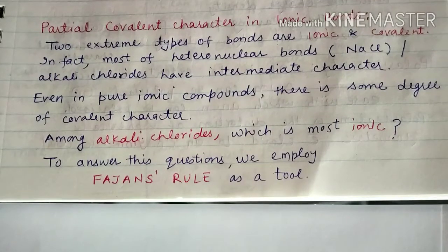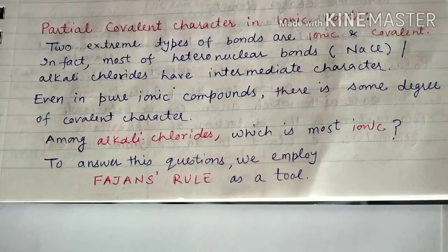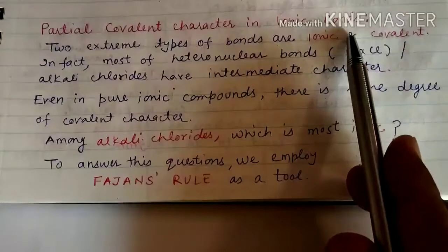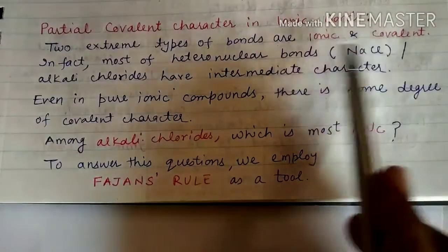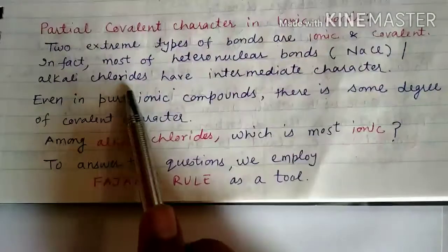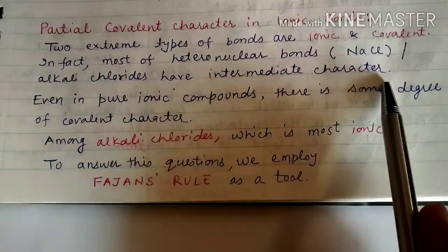Hello students. In today's class we shall discuss Fajan's Rule, which is quite important from an examination point of view from the unit chemical bonding and molecular structure. To understand Fajan's Rule, we will discuss partial covalent character in ionic bonds. Two extreme types of bonds are ionic and covalent. Most heteronuclear bonds like NaCl, KCl, and other alkali chlorides have intermediate characters.